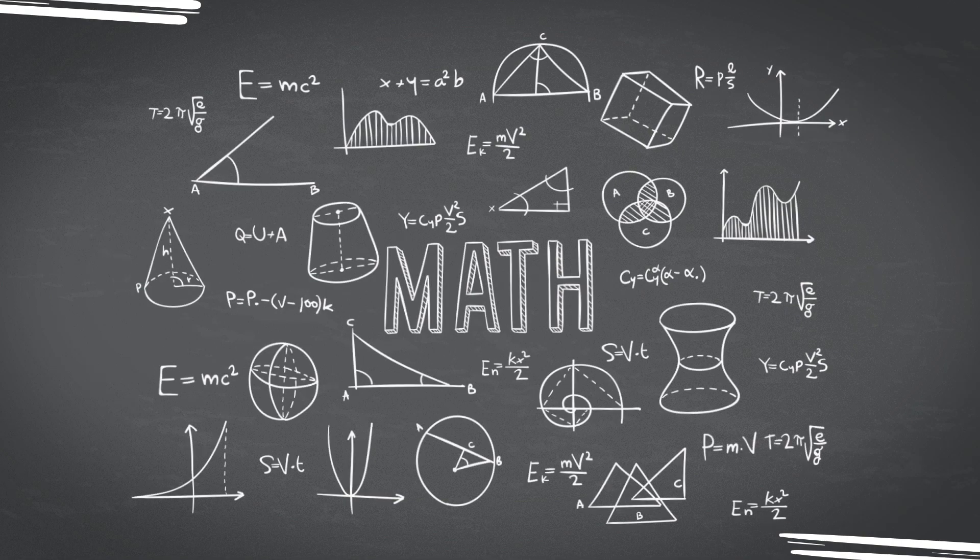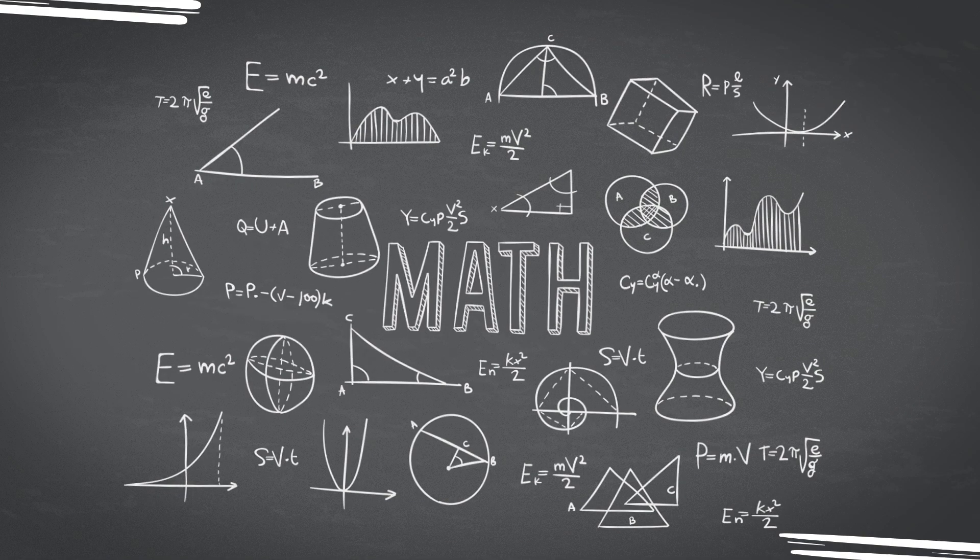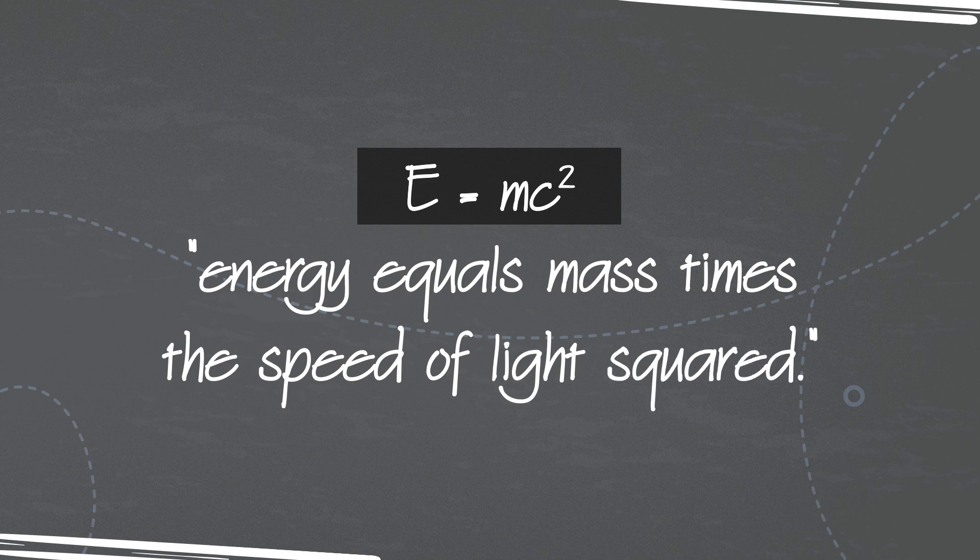One of the most famous equations in mathematics comes from special relativity. The equation E equals mc-squared means energy equals mass times the speed of light-squared.